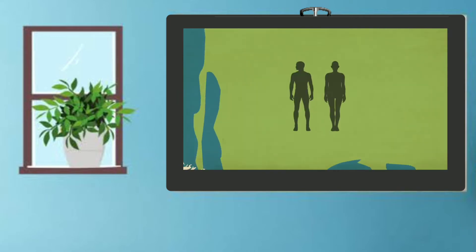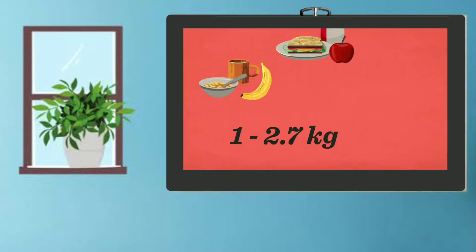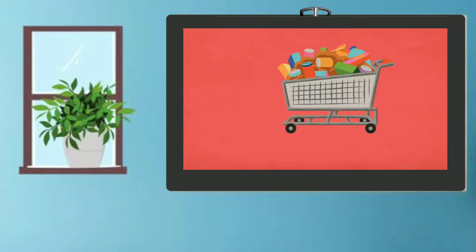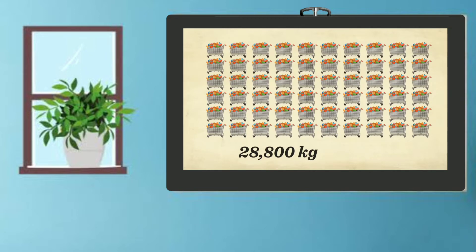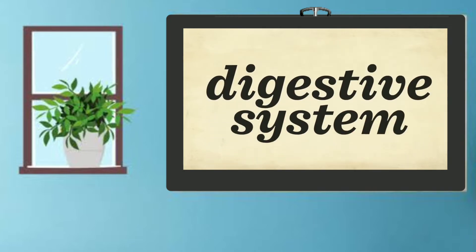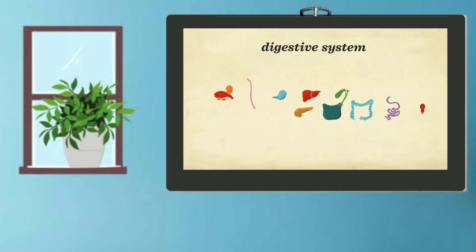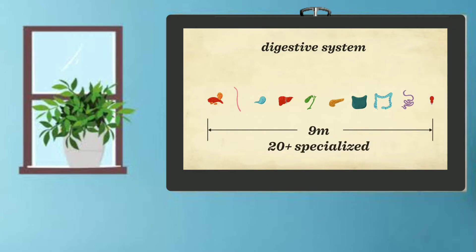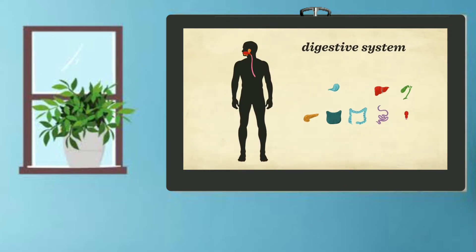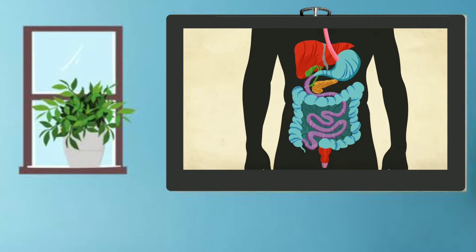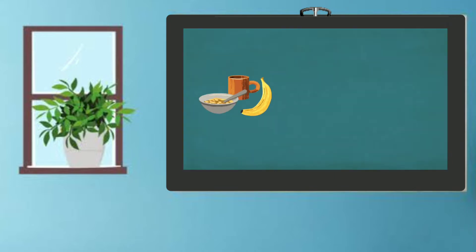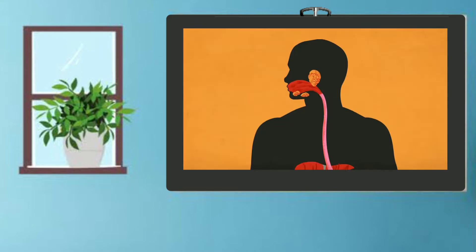Across the whole planet, humans eat on average between 1 and 2.7 kilograms of food a day — that's over 365 kilograms a year per person, and more than 28,800 kilograms over the course of a lifetime. And every last scrap makes its way through the digestive system, comprised of 10 organs, covering 9 meters, and containing over 20 specialized cell types — one of the most diverse and complicated systems in the human body. Its parts continuously work in unison to fulfill a singular task: transforming the raw materials of your food into the nutrients and energy that keep you alive.